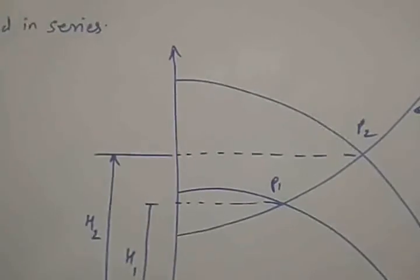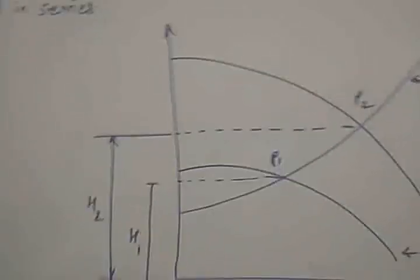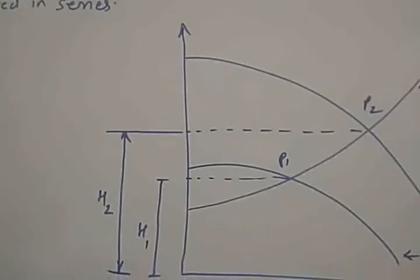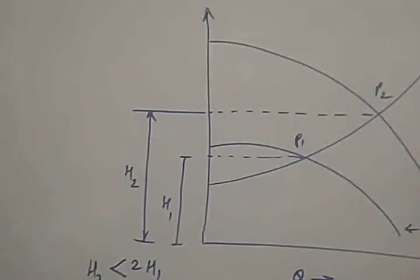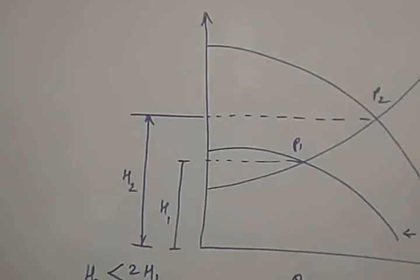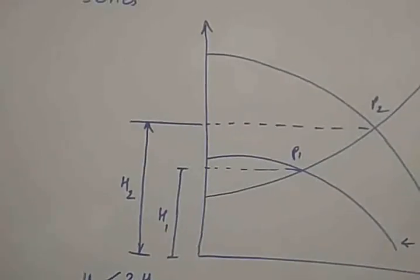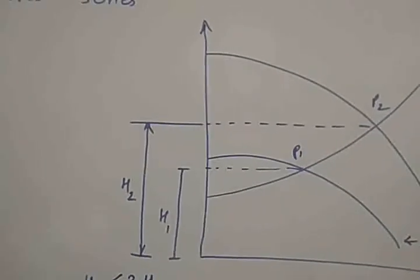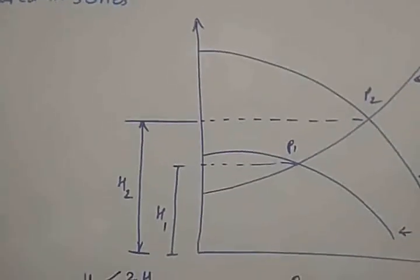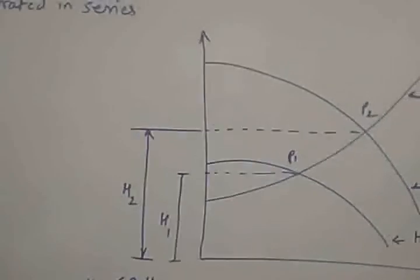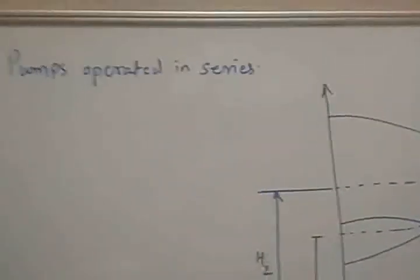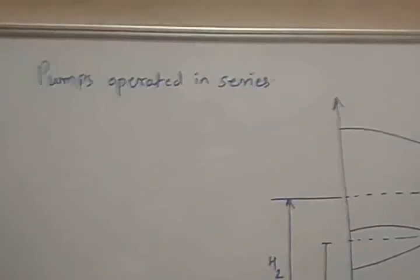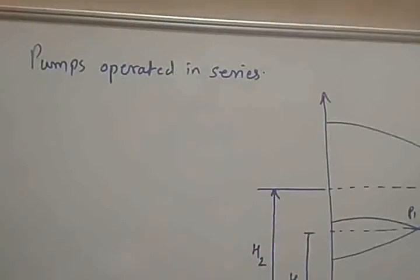So when there is a series combination, we will be using this for the larger head, but it is not that the head will be double. Accordingly, we will be selecting the pumping unit. This is the selection of a pump using pumps in series.